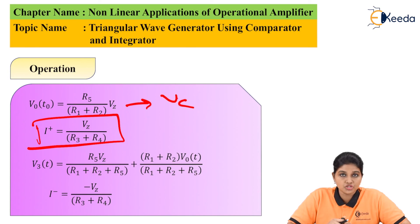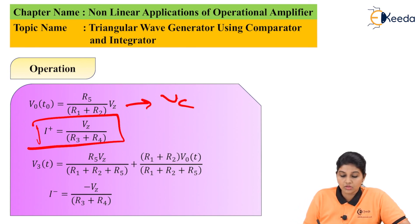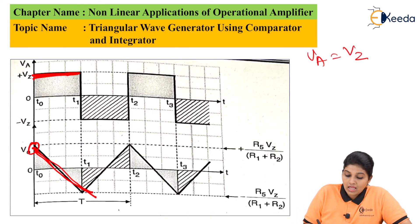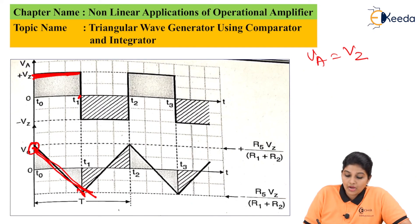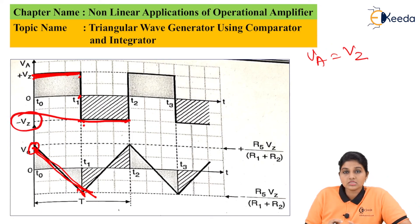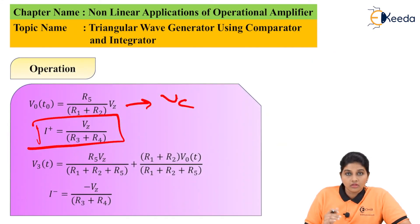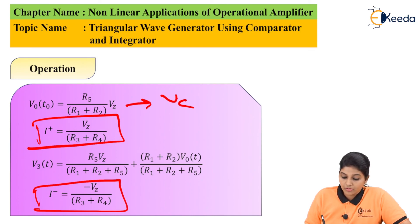Now according to the superposition theorem, the voltage at terminal 3 is given by: V3 = (R5 × Vz) / (R1 + R2 + R5) + (R1 × R2 × Vo(t)) / ((R1 + R2) × R5). At T = T1, if the voltage on the capacitor increases beyond this value, then the output of the comparator makes the transition from positive Vz to negative Vz. So the discharging of the capacitor takes place in the positive but linear direction. The capacitor voltage starts discharging positively in the interval T1 to T2, and the current is: I_minus = −Vz / (R3 + R4).